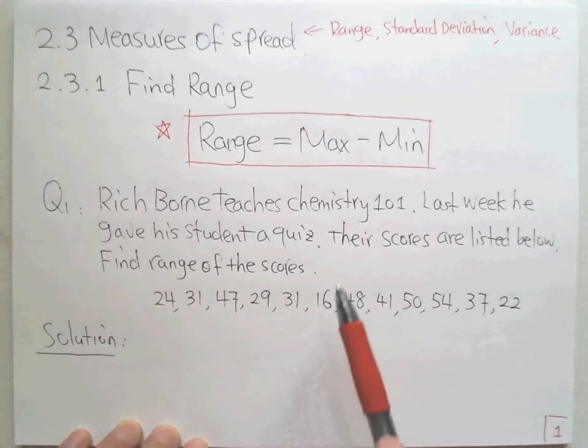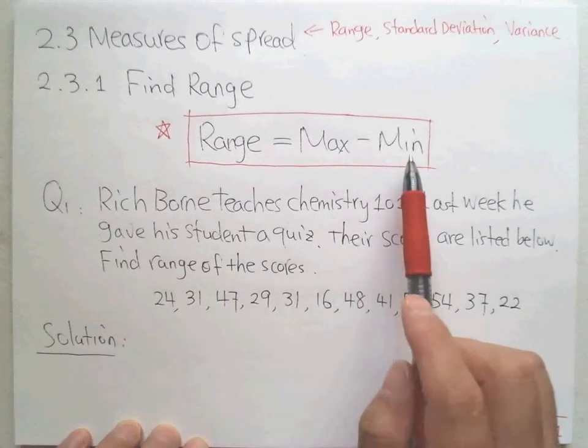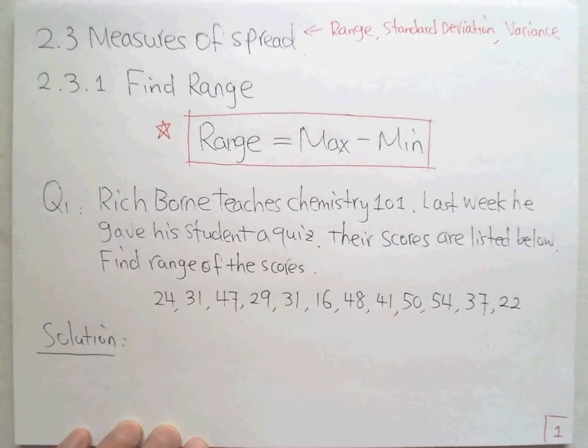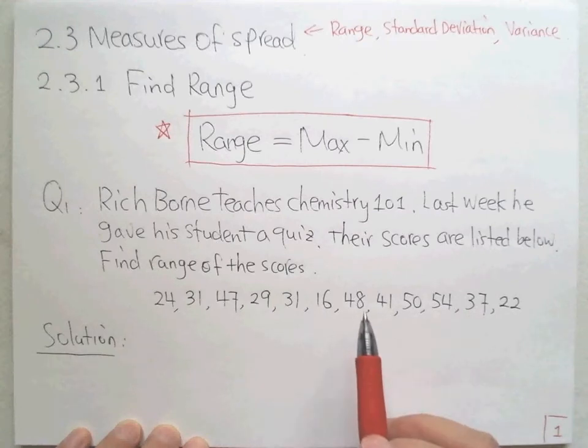Based on the definition, we need to find the minimal data value and the maximum data value. You can either find it by yourself or sort the data using your calculator, like Texas Instrument 83 or 84.